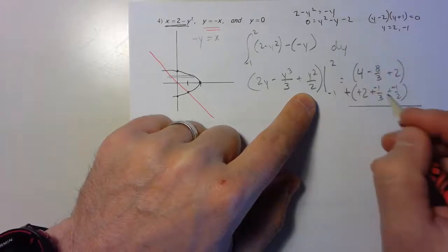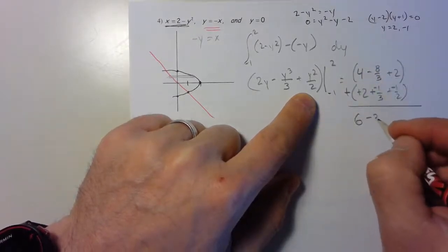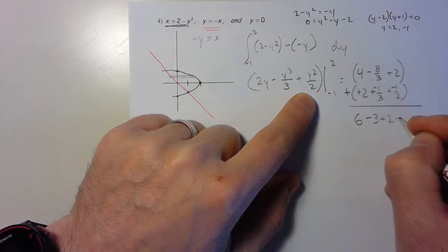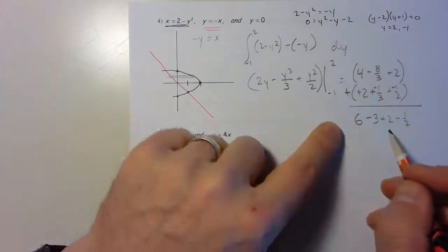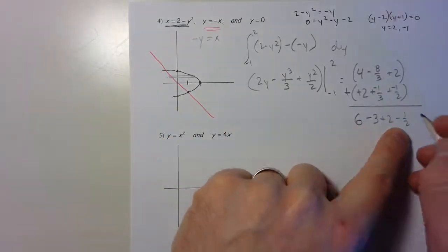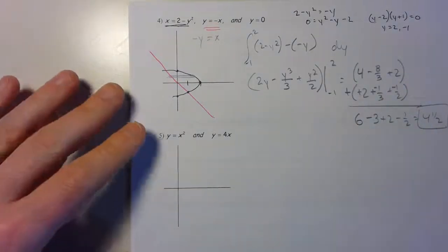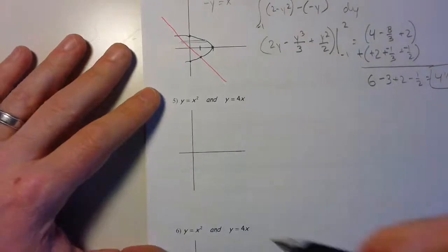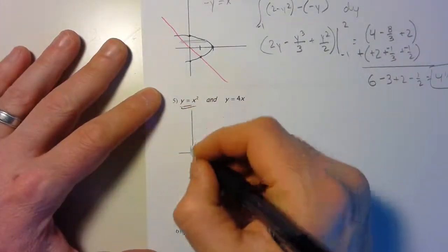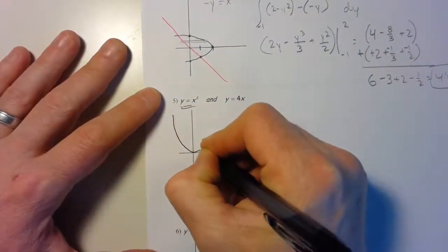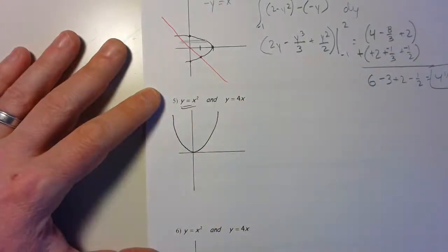Plug in the upper bound: 6 minus 9/3, so minus 3, plus 2, minus a half. Lower bound minus minus becomes positive. The negative distributes in. So I'm going to get 6 minus 3 plus 2 minus a half, so 5 minus a half is 4 and a half.